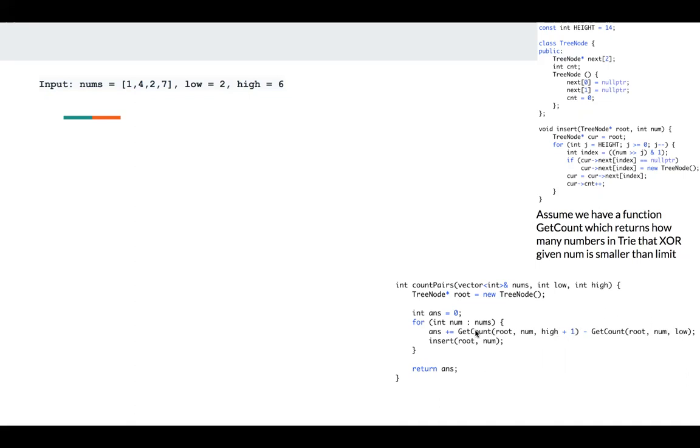The first function returns how many numbers XOR with smaller than high plus one, the second one is smaller than low. So if we subtract the second one from the first one, we get the numbers within the range low to high, right?